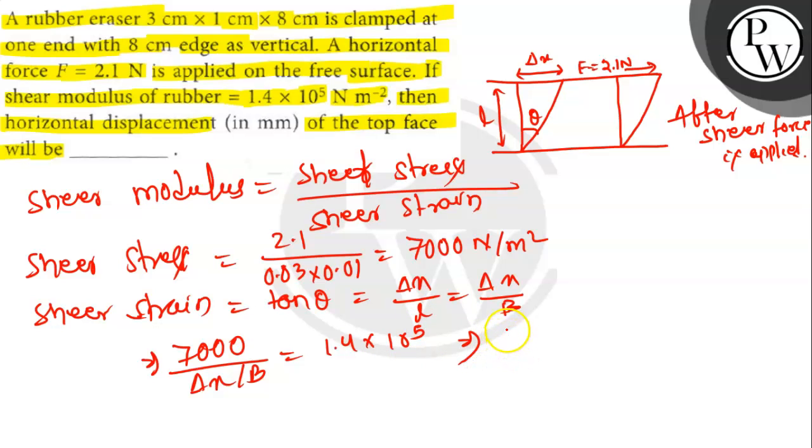After solving this we will get 7 × 8 divided by 140 is equal to del x. So del x is equal to 0.4 cm or we can write it as 4 mm. So the answer is 4 mm.